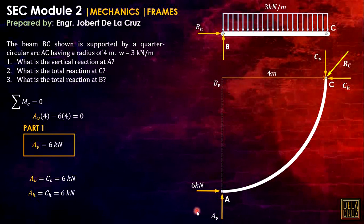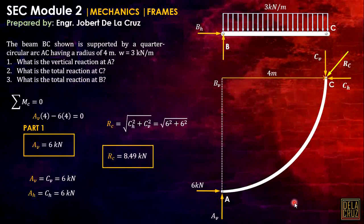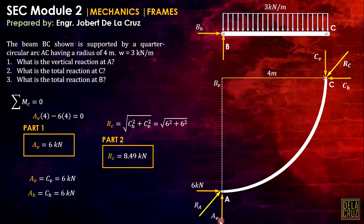Since AH equals CH and AV equals CV, the reaction at C equals the reaction at A. RC can be expressed as the square root of CH squared plus CV squared. The reactions must be equal and opposite and collinear for equilibrium. Recognizing the two-force member earlier would have allowed us to save solving time.